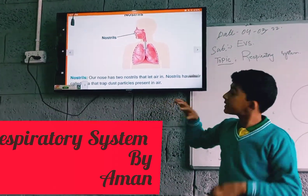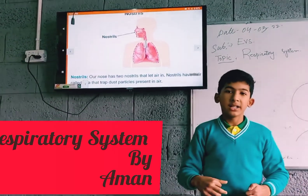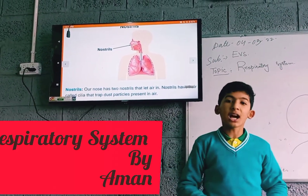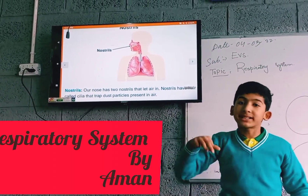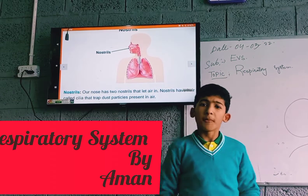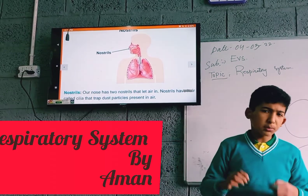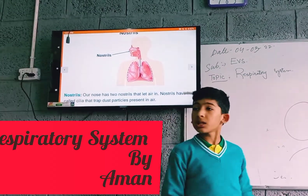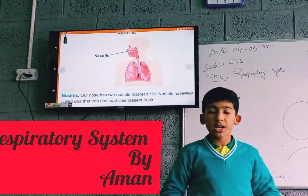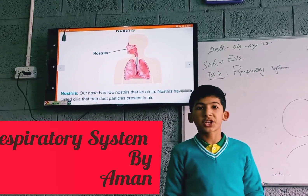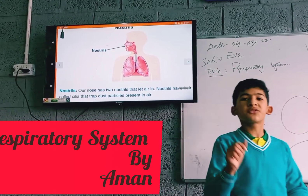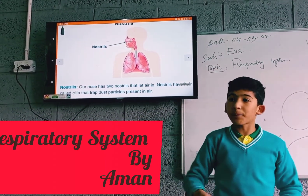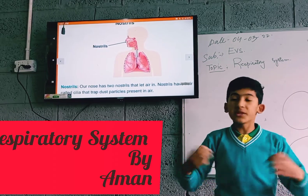The nose also has cilia, which is a hair-type structure. Cilia traps dust particles from entering the lungs. Otherwise, if there were no cilia, all the dust particles would go inside our lungs and cause infection. So cilia is very important — it traps dust particles from going inside.